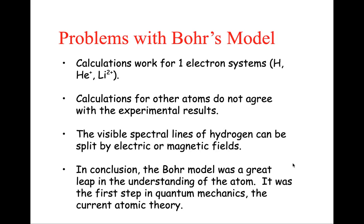The problem with Bohr's model is that his calculations only worked for atoms that have one electron. So the hydrogen atom or helium with one electron removed or the cation of lithium with a plus two charge. Calculations for other atoms did not agree with these experimental results. And so we have to look a little bit further in developing a new theory to help us explain where these electrons are located.